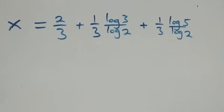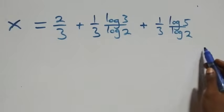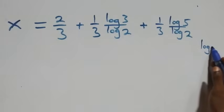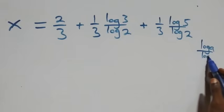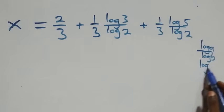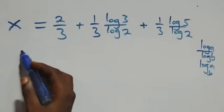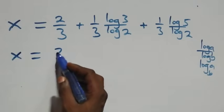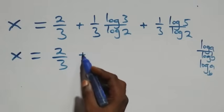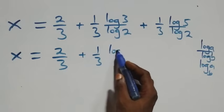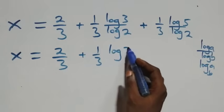Using the change of base formula, log a over log b can be written as log a to base b. So what we have here becomes x equals two over three plus one over three times log three base two, plus one over three times log five base two.